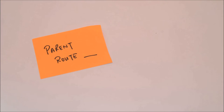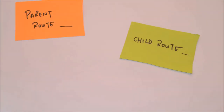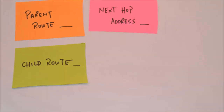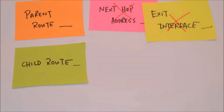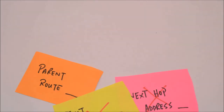Next, we are going to talk about parent and child routes. A parent route is a level 1 route, and it does not contain any next-hop IP address or exit interface. A parent route indicates the presence of level 2 routes, which we also call child routes. The subnets of the parent route are the level 2 child routes.